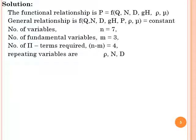To solve using the Buckingham Pi theorem, we select repeating variables from three different groups: one from geometric property, one from fluid property, and one from flow property. Accordingly, the three repeating variables selected are density ρ, speed N, and diameter D of the rotor.